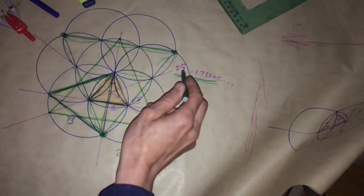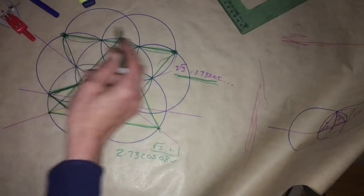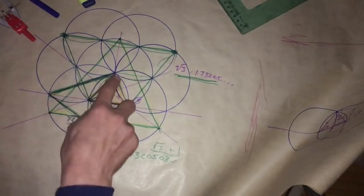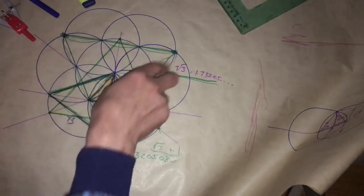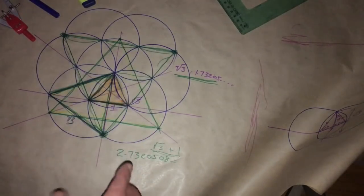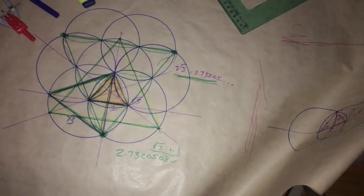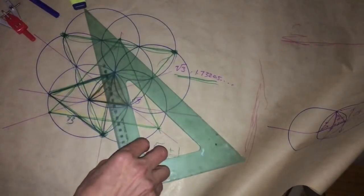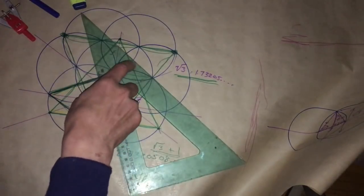And now if you were to continue this into the fruit of life, and then to the, sorry, the flower of life and then to the fruit of life, all it is is a series of equilateral triangles and they keep growing and expanding, and it's the square root of 3 which is the important part in there.